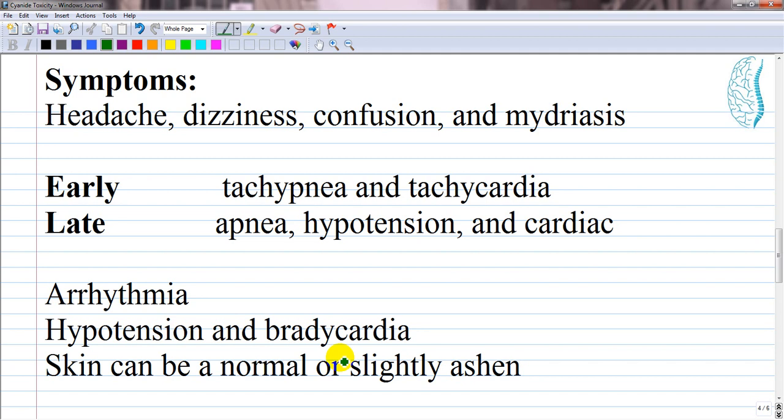Patients with cyanide poisoning will not be cyanotic but will have a cherry red color due to excess oxygen in the bloodstream. Oxygen is present but cannot be utilized properly.